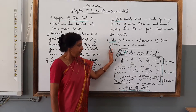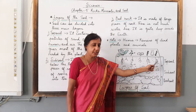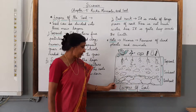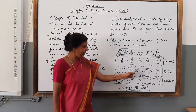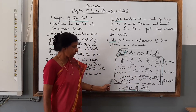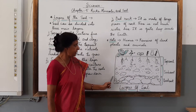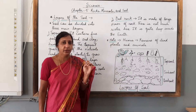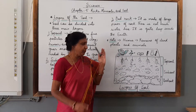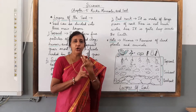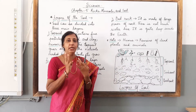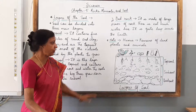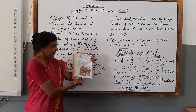So we have the topsoil at the top, the second layer is the subsoil, and then comes the bedrock, which has a large amount of rocks. The bedrock is quite deep inside the earth. In all, there are three layers, which are also shown in your textbook.